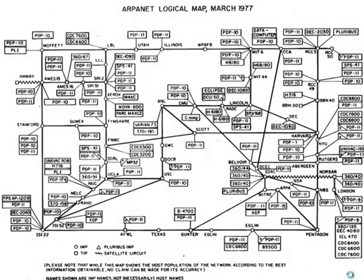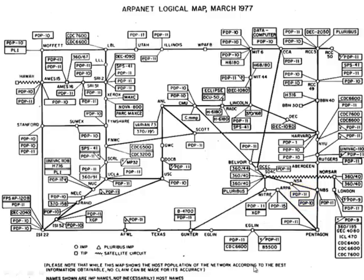This is a map of the ARPANET network as it was in March 1977, showing more or less the geography of the US. You can also spot network connections over wireless — satellite circuits — including a satellite connection to Hawaii and a satellite network connection to London. It also shows what computers existed at most locations; the common computers on ARPANET at this point were PDP-10s and PDP-11s, DEX systems, and IBM 360s.